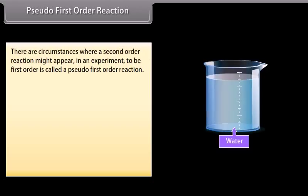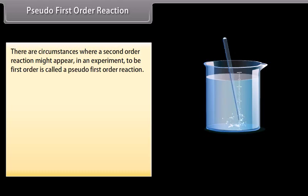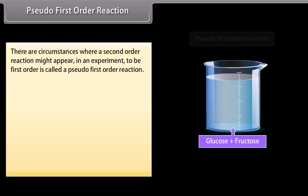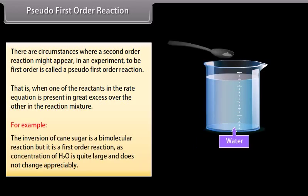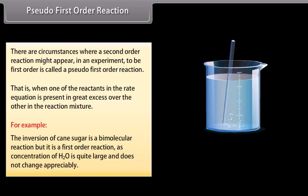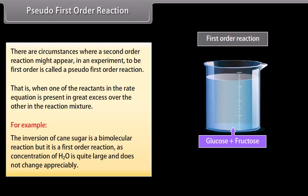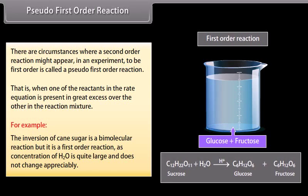There are circumstances where a second-order reaction might appear in an experiment to be first-order; this is called a pseudo-first-order reaction. That is, when one of the reactants in the rate equation is present in great excess over the other in the reaction mixture. For example, the inversion of cane sugar is a bimolecular reaction, but it is a first-order reaction as the concentration of H₂O is quite large and does not change appreciably.